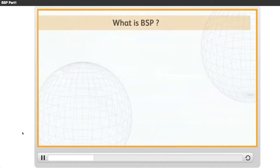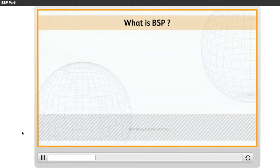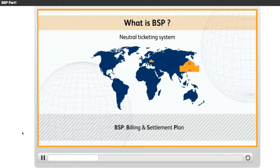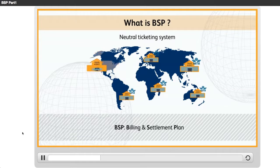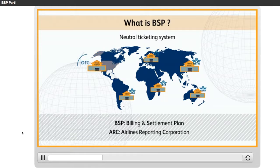What is BSP? BSP is the abbreviation for Billing and Settlement Plan. It is a neutral ticketing system installed in all IATA travel agencies worldwide, with the exception of the United States, where its equivalent ARC — Airlines Reporting Corporation — is used, as well as some other countries where it is not available.